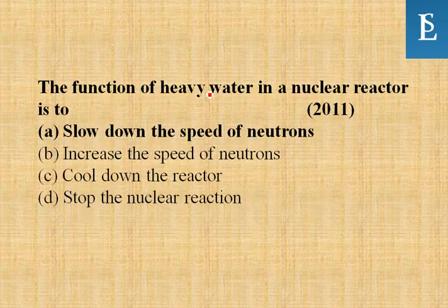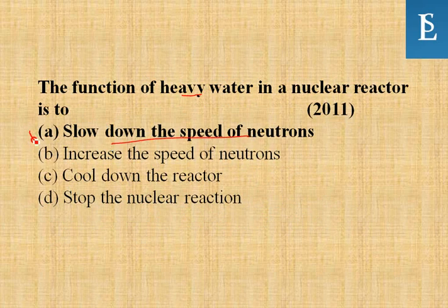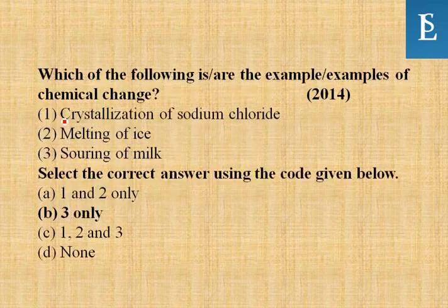The function of heavy water in a nuclear reactor is to slow down the speed of neutrons. This is the correct option.